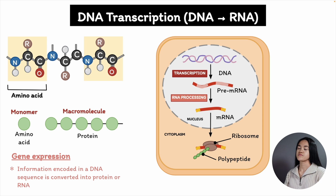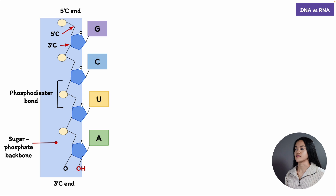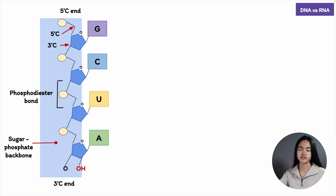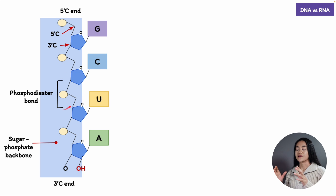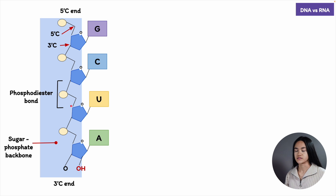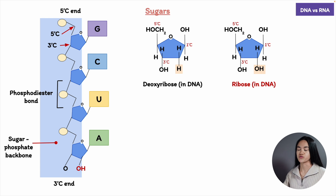Let's go through some important features of RNA. RNA is like DNA — it's a linear polymer made of four different nucleotide monomers linked together by phosphodiester bonds. But it's chemically different. In RNA, the nucleotides are ribonucleotides; they contain the sugar ribose, hence the name ribonucleic acid. Whereas in DNA, the sugar is deoxyribose.